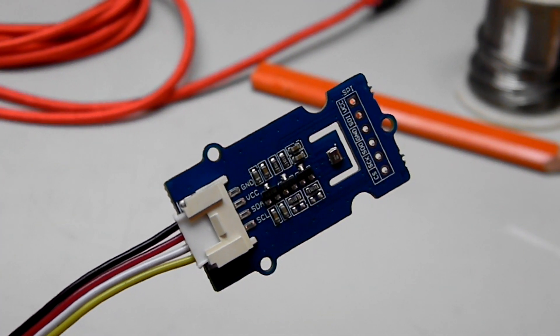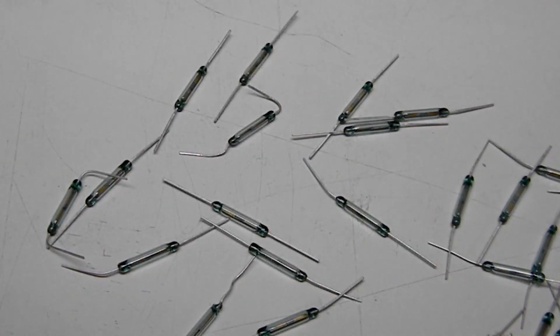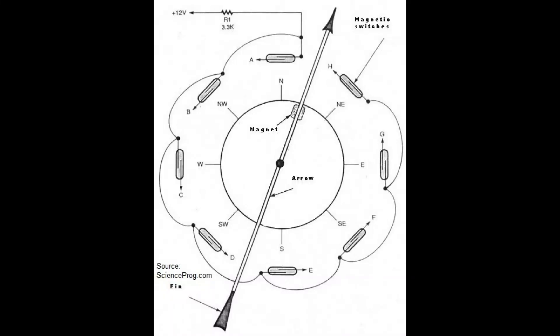Future expansions will measure other weather data, like barometric pressure, so we can tell which direction a cold front is coming from, and wind direction using an array of magnetic reed switches and a wind vane.